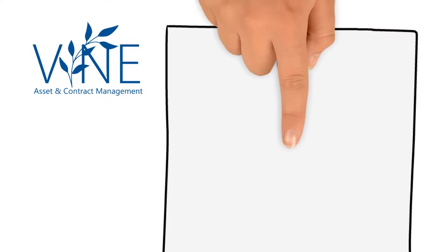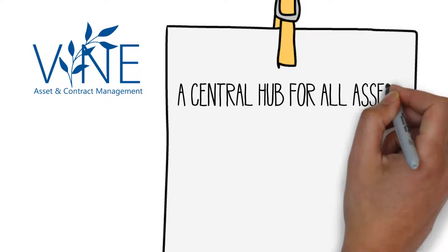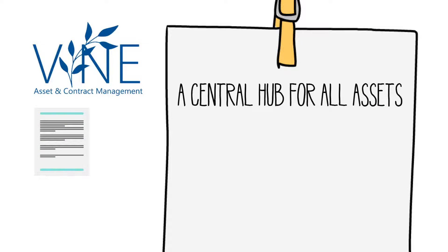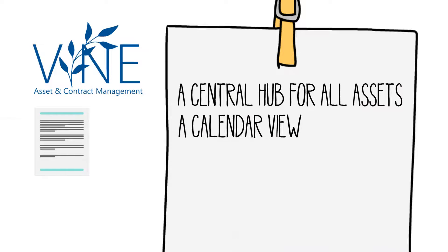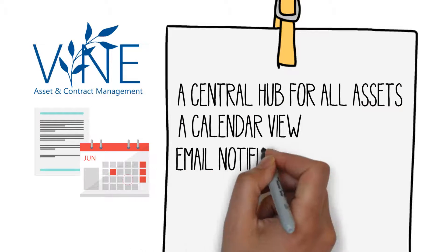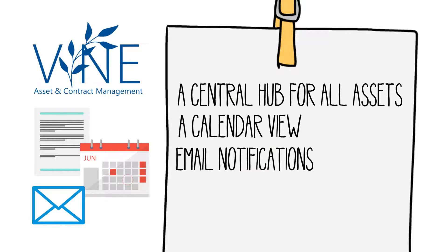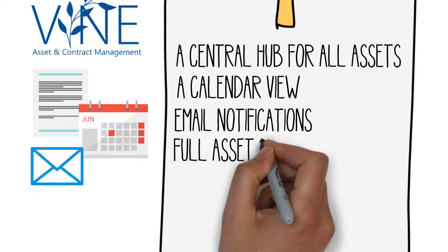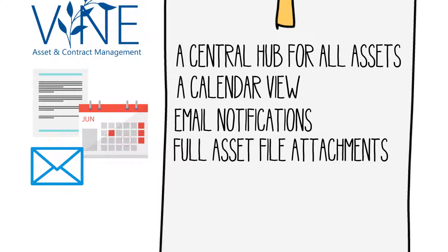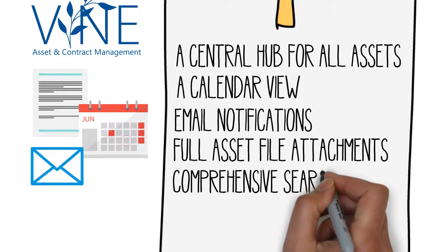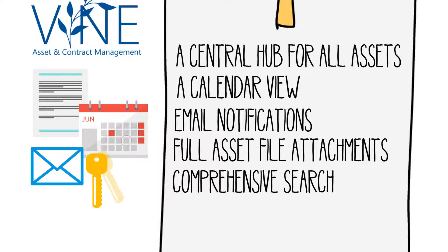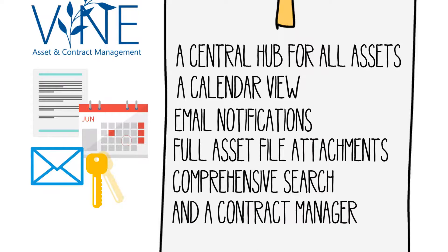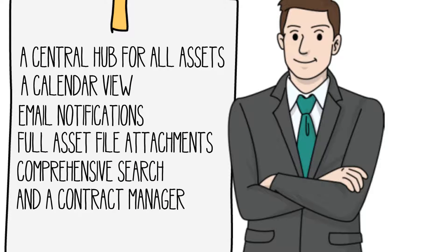Some of Vine's key features include a central hub for all assets, contracts, and maintenance schedules, a calendar view with scheduling, email notifications, pending events and work orders, full asset file attachments for pictures, receipts, contracts, and more, comprehensive search including contract search, asset search, serial number search, vendor search, and location search, and a contract manager to stay on top of important deadlines.